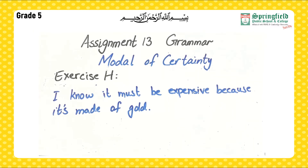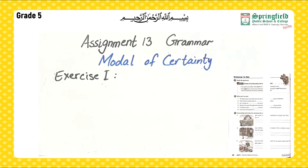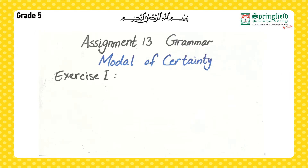Exercise I: Imagine you have found some objects. Write a conversation like the one in Exercise F. Write what you think the object must, might, or can't be, and give the reason why each time. You can take ideas from the pictures given in your book.